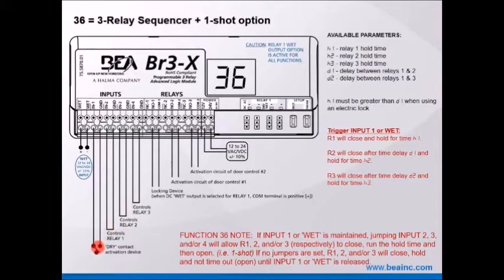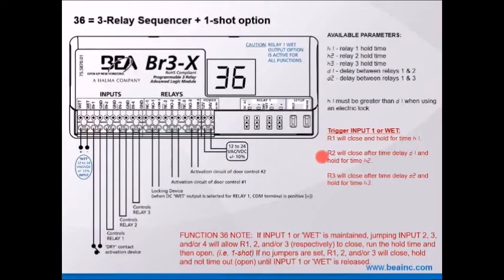In the past, if you make and hold the input, all outputs will change and hold — the hold timer will freeze and not start counting down until the input releases. Not the case when you put a jumper on input two, three, or four. Relay two will close after time delay D1 and hold for H2. Relay three will close after D2 delay and hold for H3.